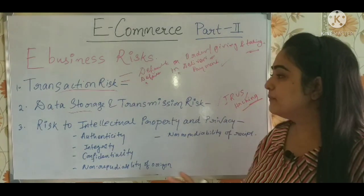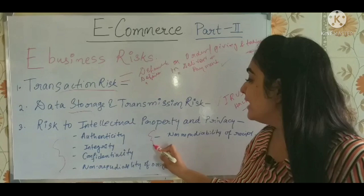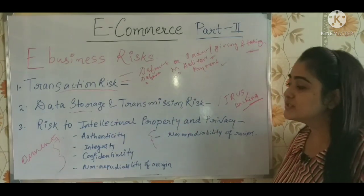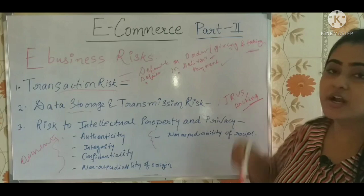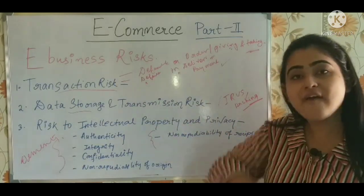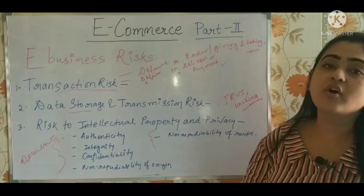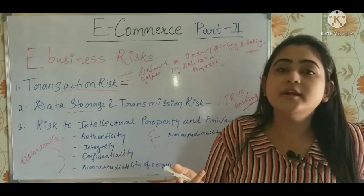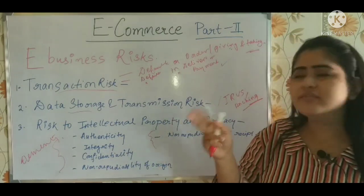The third risk is risk to intellectual property and privacy. This has five elements. The first is authenticity — authentic transactions taking place. For example, the consumer confirms they ordered a product and the seller confirms they received the order. If the seller delivers a product and the buyer says they never placed an order, or the buyer claims they ordered but the seller says they never received it, then authenticity is lacking.